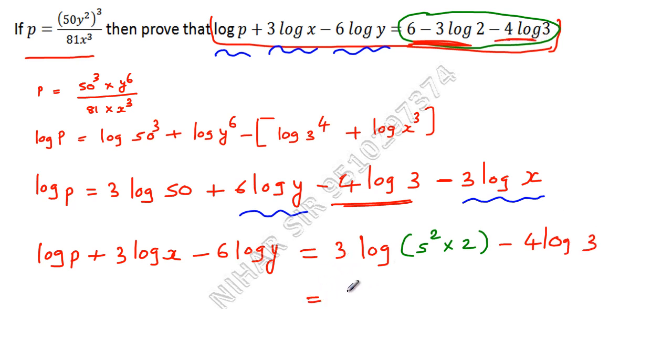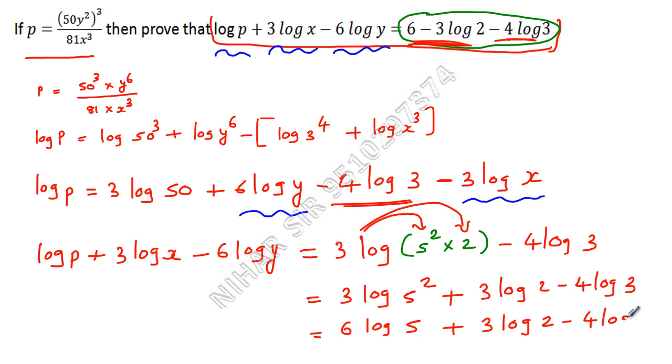So now this will be 3 log. This 3 log is with both terms. These also and these also. So 3 log 5 square plus because here we have multiply. So multiply becomes plus in logarithm. So this will be 3 log 2 minus 4 log 3. Now I will take this 2 over here. So this will be 6 log 5 plus 3 log 2 minus 4 log 3.